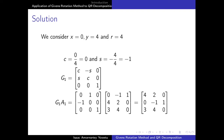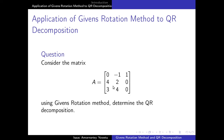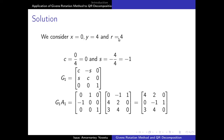From the matrix we want to eliminate all elements beneath the first diagonal element — that is, the elements 4 and 3. In the first step we identify X to be 0 and Y to be 4. We find the length of X and Y, which gives us R = 4. We then find cos θ = 0 and sin θ = -1, and substitute into the first 3×3 Givens rotation matrix G1. We pre-multiply G1 to our original matrix A to get a new matrix.